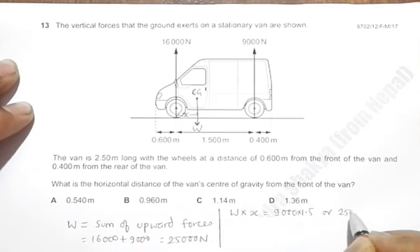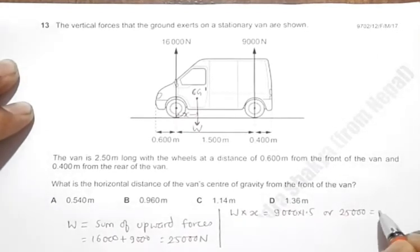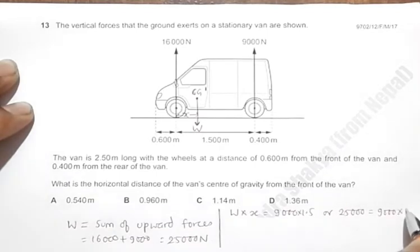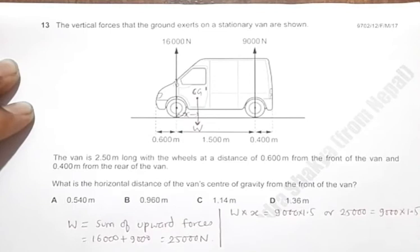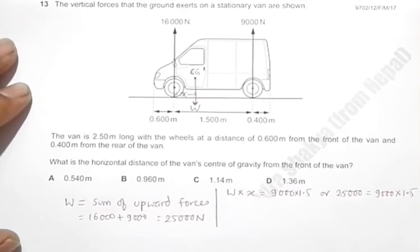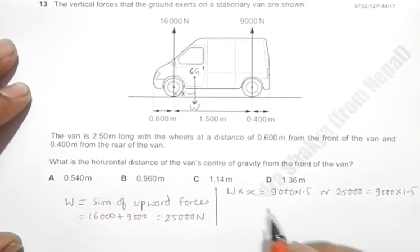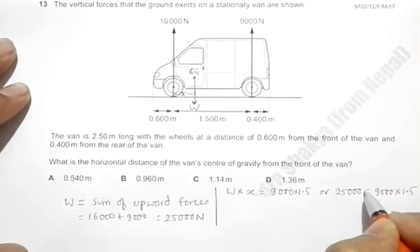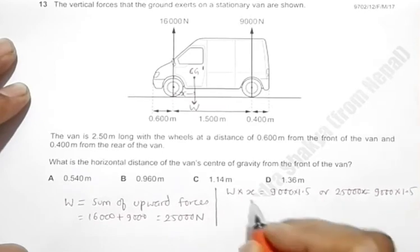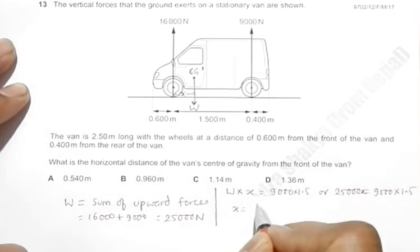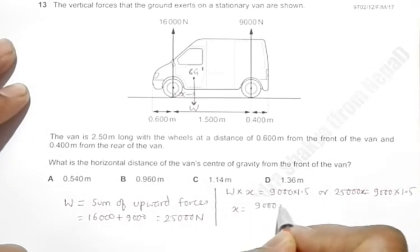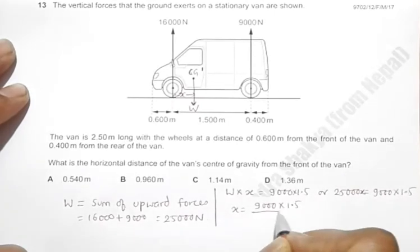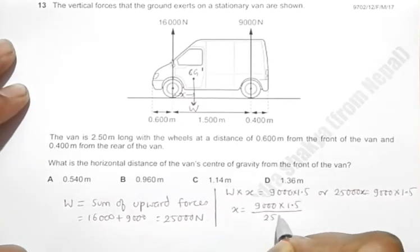This means W equals 25,000, so 25,000 into x equals 9,000 into 1.5. Therefore, x equals 9,000 times 1.5 divided by 25,000.